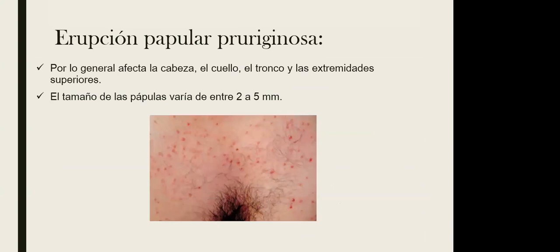La erupción papular pruriginosa por lo general afecta cabeza, cuello, tronco y las extremidades superiores principalmente. Son pápulas rojizas, lesiones elevadas, bastante pequeñas, de entre 2 a 5 milímetros, y se pueden presentar varias.